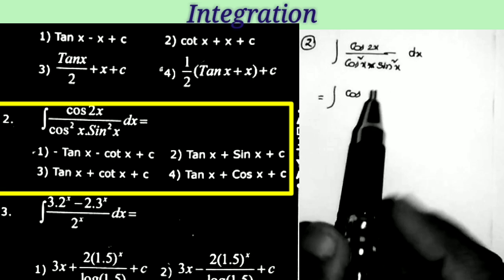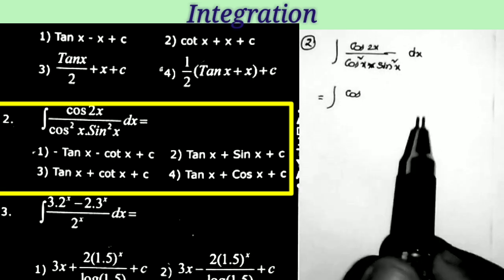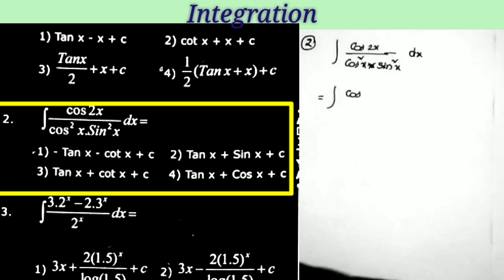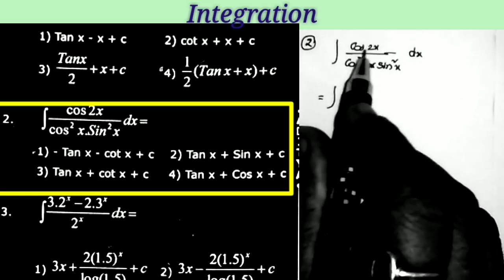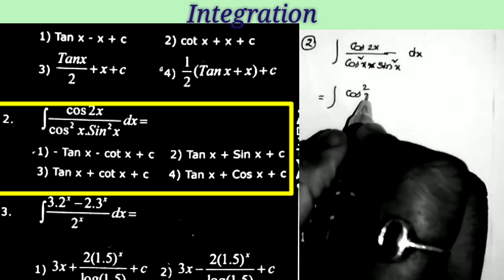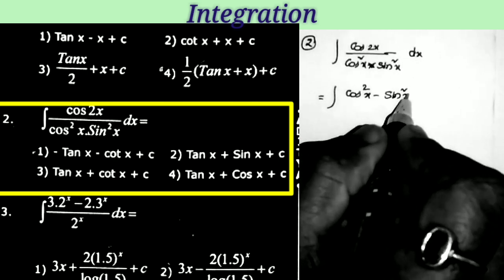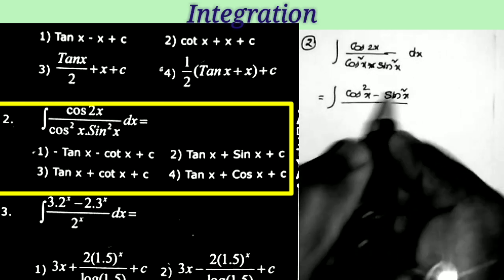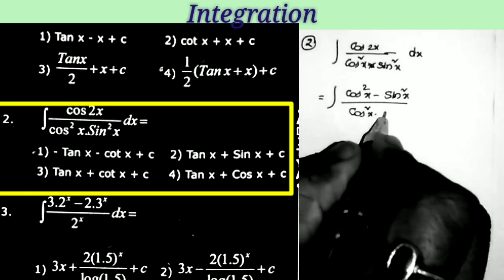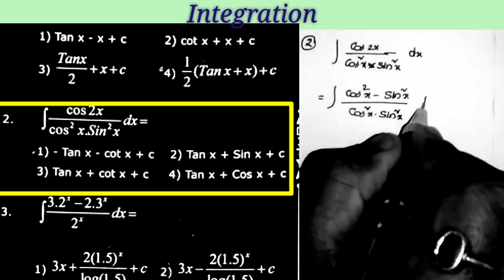Second question: integral of cos2x / (cos²x · sin²x) dx. First I replace the cos2x formula. What is the cos2x formula? cos²x − sin²x. So cos2x = cos²x − sin²x, all over cos²x · sin²x.